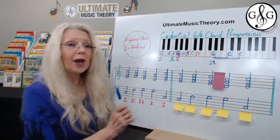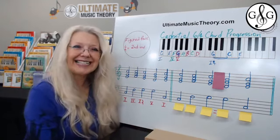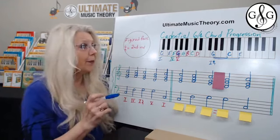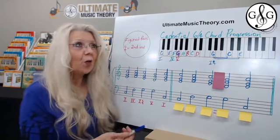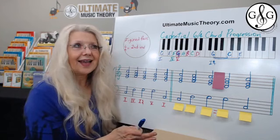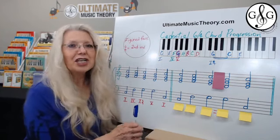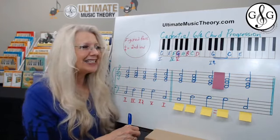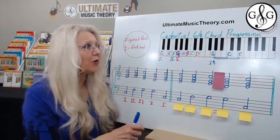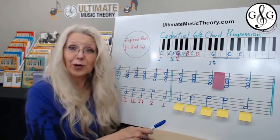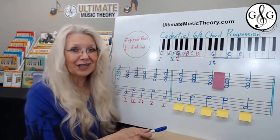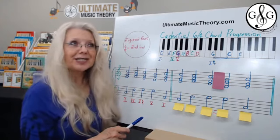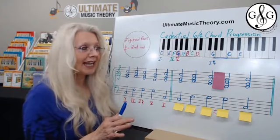I like to use the KISS method — keep it super simple. When we talk about cadential 6-4 chords we often think about baroque music. My co-author Sheila McKibben has written amazing blogs, including one on the cadential 6-4 chord progression at ultimatemusictheory.com. She described it to me as the 'baroque bling.'